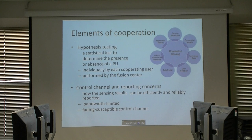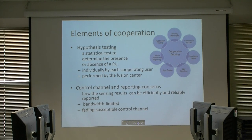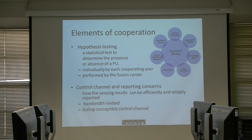The primary user has initial access to a particular bandwidth. If the primary user is not using it, secondary users try to use it, and if the primary user comes back, the secondary users give it back. The control channel and reporting element concerns how sensing results can be efficiently and reliably reported to the fusion center, considering things like bandwidth limitations and training.